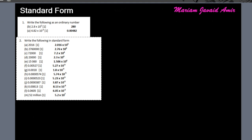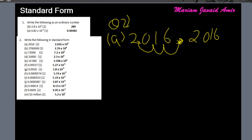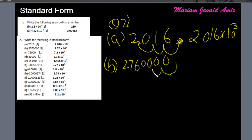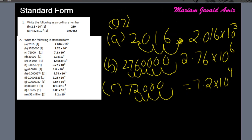Question 2 says: write the following in standard form. For part A, we write 2016 in standard form — the decimal must move after the first non-zero digit, which is 2, so we move it three places to the left, adding 3 to the power of 10. For part B, 2,760,000: the decimal moves 6 places, giving 2.76 × 10⁶. Then 72,000: decimal moves four places left, giving 7.2 × 10⁴.